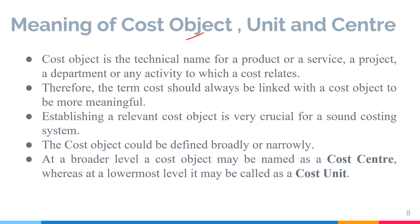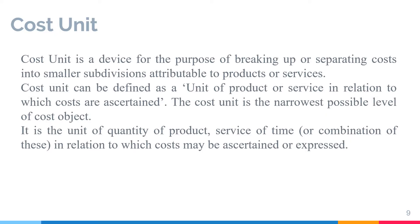Now the meaning of cost object, cost unit, and cost center. A cost object is a technical name for the product, service, project, department or any activity for which we need to ascertain cost. The cost should always be linked with the cost object, and to create a sound costing system, the cost object should be relevant. We can define cost objects broadly or narrowly: if defined at a broad level, that is the cost center; if defined at a lower level, that is the cost unit. Cost unit is the narrowest possible level of the cost object — a technique in which we break up the cost of a product or service.